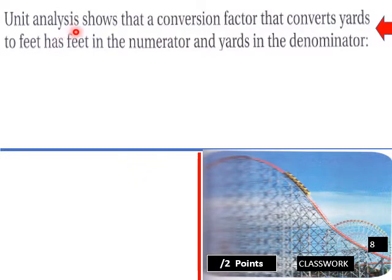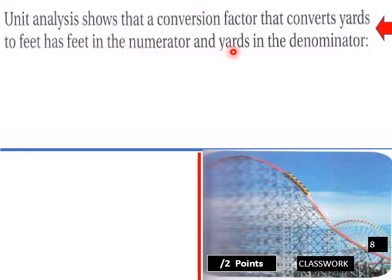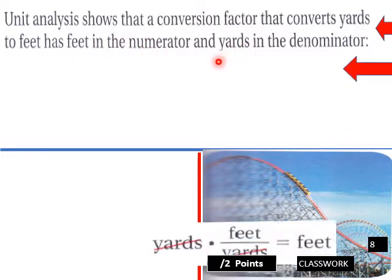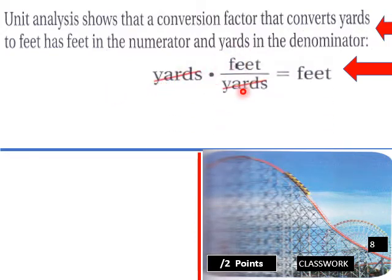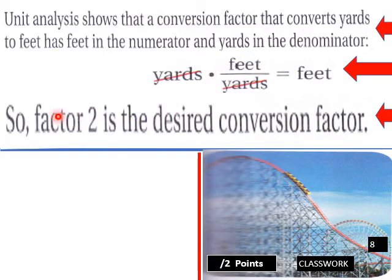Unit analysis shows that the conversion factor converting yards to feet should have feet in the numerator and yards in the denominator. That way, yards cancel and we're left with feet. So factor two — three feet over one yard — is the desired conversion factor. What you want to convert to goes in the numerator of your conversion factor.